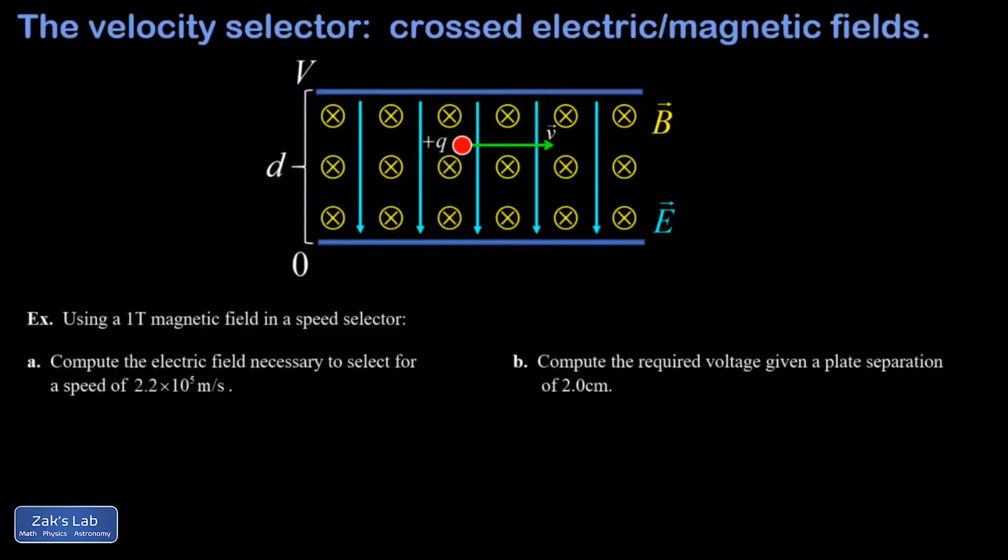In this video, we derive a formula for the relationship between electric and magnetic fields so that a charged particle of a particular speed will be undeflected when it passes through the field combination.